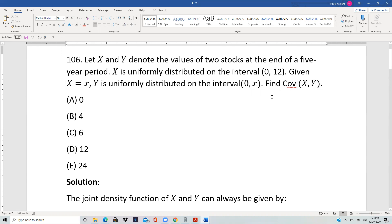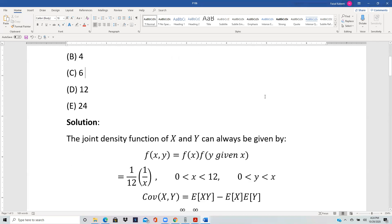The joint PDF in general can always be written in this form: the joint PDF of X and Y is equal to f(x) times f(y given x). In general, if you feel any confusion, you can also say that this is g(x) and this is h(y given x).